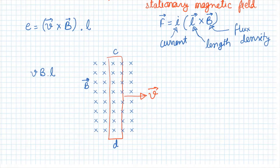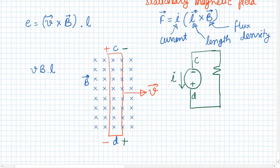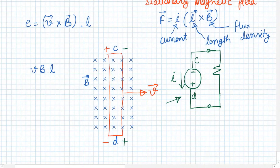What can be the polarity of the induced EMF? There are two options: C is more positive compared to D, or D is more positive compared to C. Let us say D is more positive compared to C. We can draw a circuit and connect a resistance across CD. The induced EMF in CD will cause a current to flow from C to D in the external circuit, because that is the source and inside the source positive current flows from negative to positive. So the current in the conductor will flow in this direction.